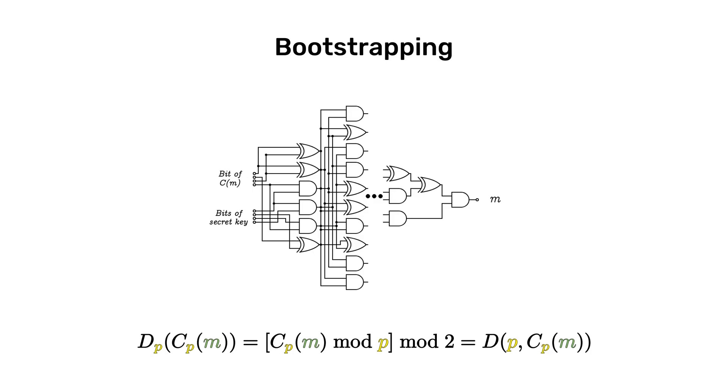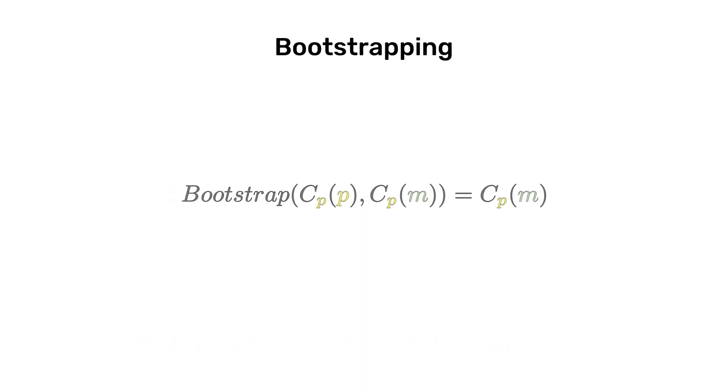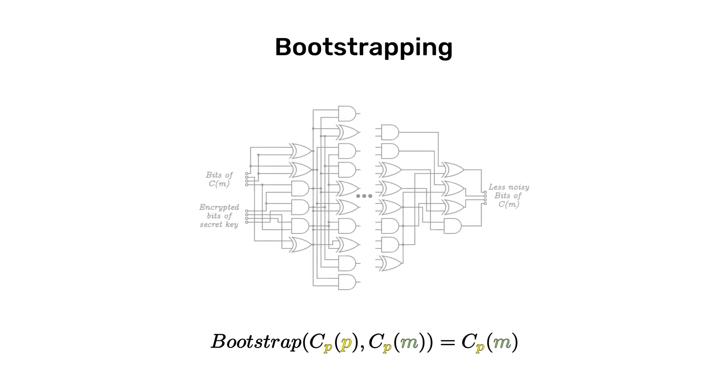Furthermore, the scheme we presented here encrypts binary messages, so to get an encryption of the secret key, we simply need to have an ordered set of the encryptions of its bits. With these two ingredients, we can perform homomorphic decryption and eliminate the noise produced by previous operations. Homomorphic decryption, however, introduces some noise of its own, like any other function. But as long as we can still perform reliably one operation of addition or of multiplication before needing bootstrapping again, we have reached fully homomorphic encryption.